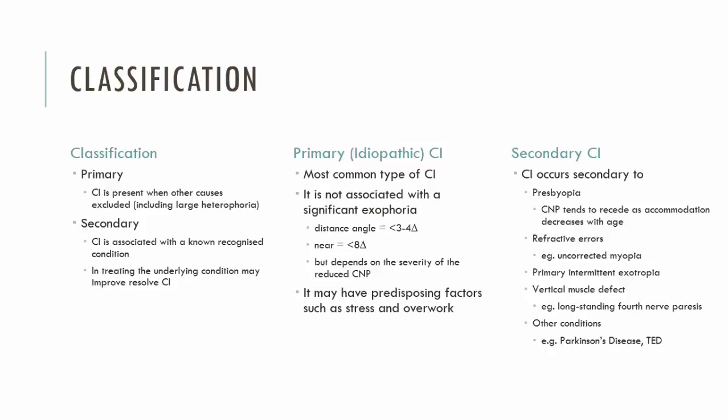Secondary CI will be related to some underlying cause. It could be accommodation — presbyopia or refraction being an issue — in which case you would manage that to see whether the CI improves. There could also be oculomotility disorders or other conditions known to be associated with CI, such as Parkinson's disease.